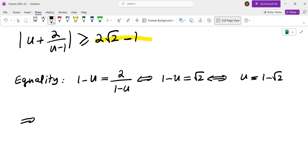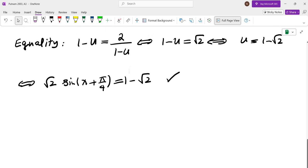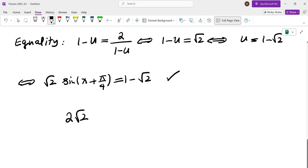Which means root two sine of x plus pi over four would have to be one minus root two. And of course, this is possible because one minus root two over root two is between negative one and zero. So therefore, the answer to the problem is two root two minus one. And that brings me to the end of this video. I will see you in the next video.